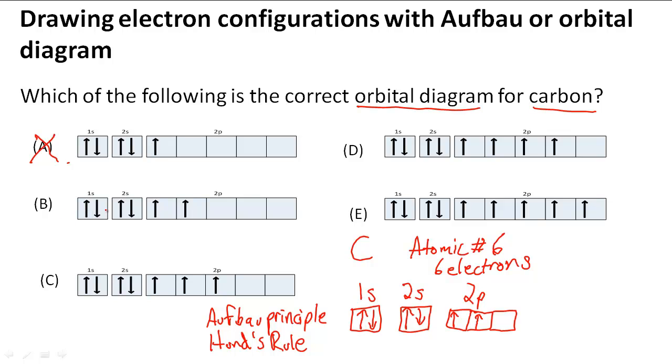So B has 1, 2, 3, 4, 5, 6 and that looks sort of like ours right here. So we have 1, 2, 3, 4, 5, 6 and notice that they're not sharing until the other orbitals are filled. So for B that is the correct answer to our problem.